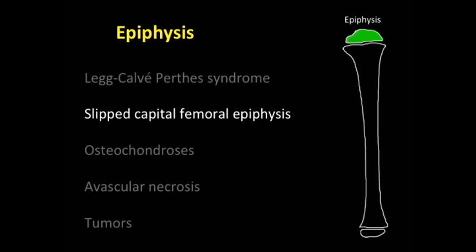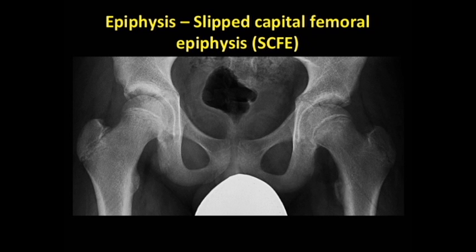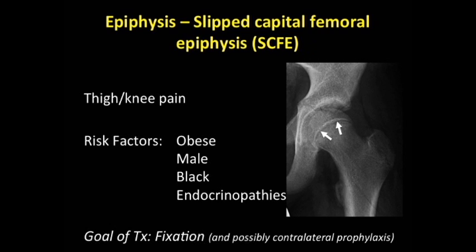Let's talk about SCFE, slipped capital femoral epiphysis. Here is a child with slipped capital femoral epiphysis — do you see the lesion? Which side is affected? Radiologists can play a valuable role in identifying this lesion early. This lesion is subtle, and it's on your right-hand side, or the child's left. The first thing you want to look for is this subtle widening and lucency of the physis — this is a pre-slip. These patients often present with thigh or knee pain. Common risk factors include obesity, often male, often African-American. They also tend to occur in patients with endocrinopathies. The goal is to identify this lesion early and fix it before further damage occurs.